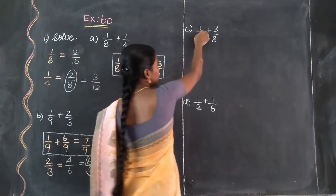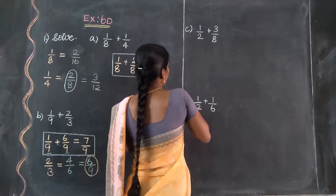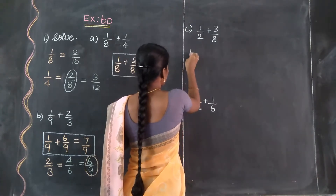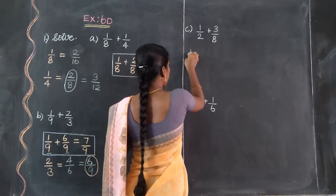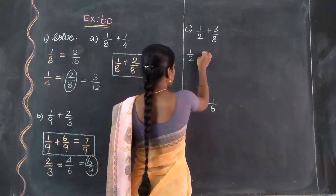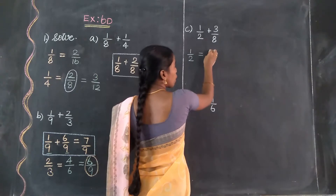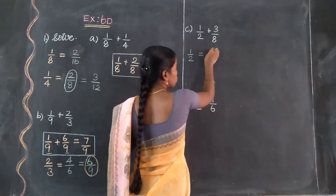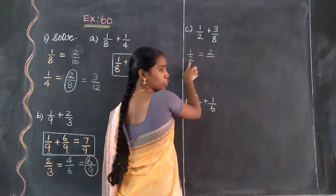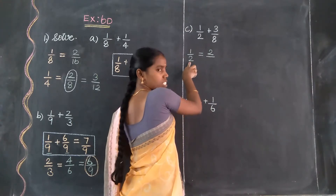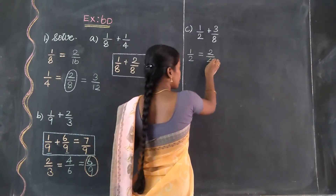So 1 by 2 is the first fraction value. Starting value is 1, so we use the 1 times table: 1 one is 1, 1 two is 2. Then starting value 2, so we use the 2 times table: 1 two is 2, 4 twos are 8.